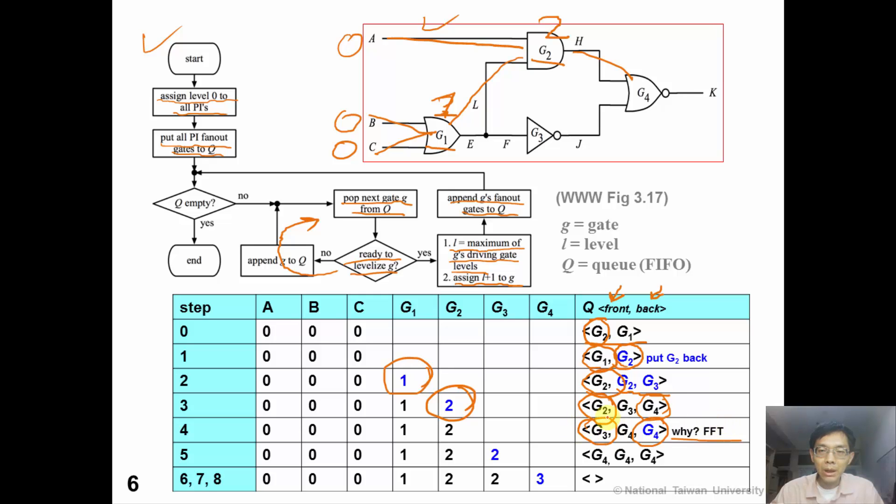And the next gate we pop out from the queue is G3. And the G3 is levelized to 2. And the fanout of G3 is G4. So we append G4 at the end of the queue again. Eventually, G4 is levelized to 3. And then we finish the algorithm.